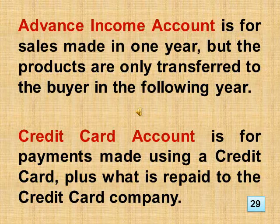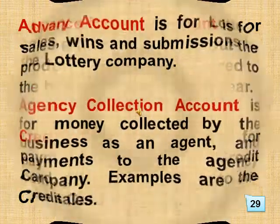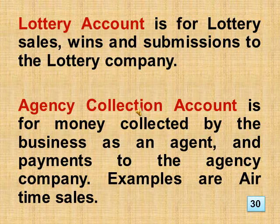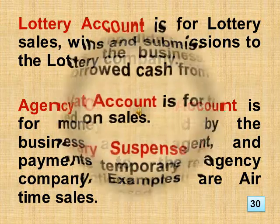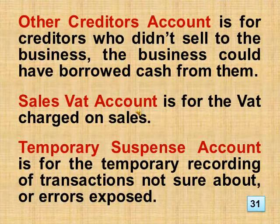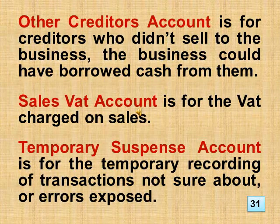Credit Card account is for payments made using a credit card plus what is repaid to the credit card company. Lottery account is for lottery sales, wins and submissions to the lottery company. Agency Collection account is for money collected by the business as an agent and payments to the agency company; examples are airtime sales. Other Creditors account is for creditors who didn't sell to the business — the business could have borrowed cash from them. Sales VAT account is for the VAT charged on sales. Temporary Suspense account is for the temporary recording of transactions not sure about, or errors exposed.